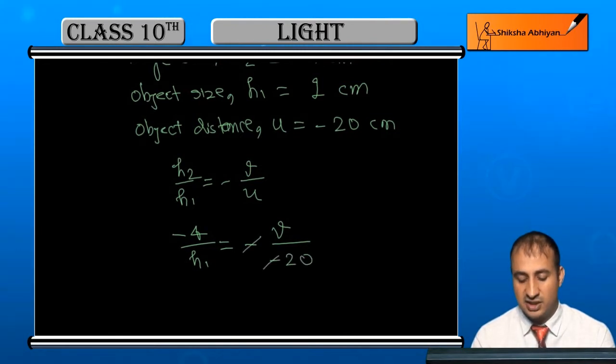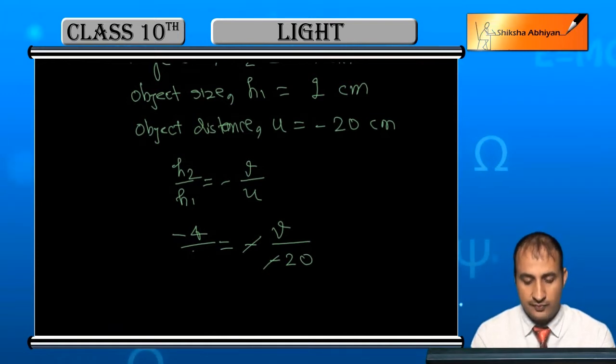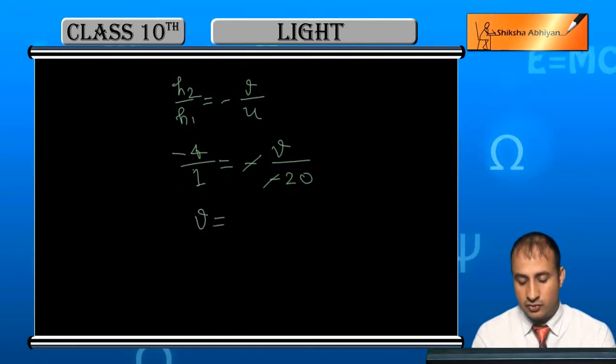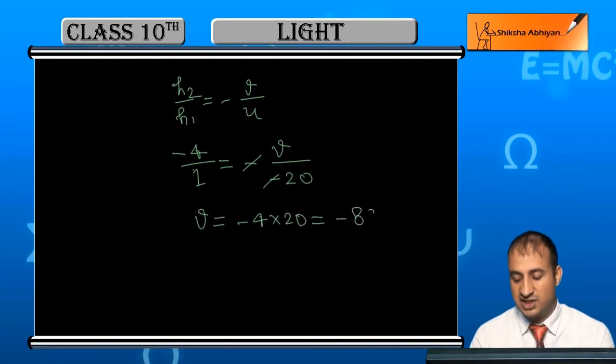So minus cancels minus. h1 is 1, so v is equal to -4 × 20, that is -80.